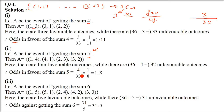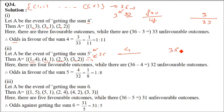Probability is different — it is favorable cases divided by total number of cases. Odd in favor and odd against, the formula changes. For odds in favor of getting the sum 5: the combinations (1,4), (4,1), (2,3), (3,2) give you 5 — so there are 4 favorable terms. Subtract from 36: 36 minus 4 is 32. So 4 by 32, written as 1 is to 8.